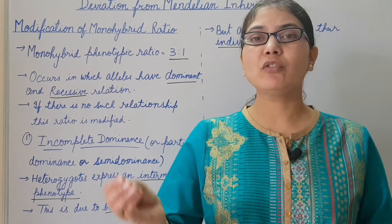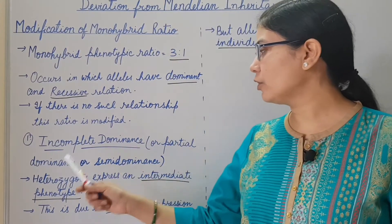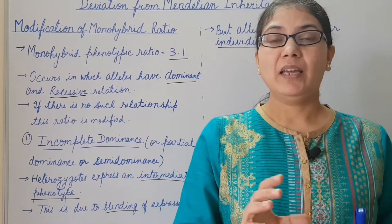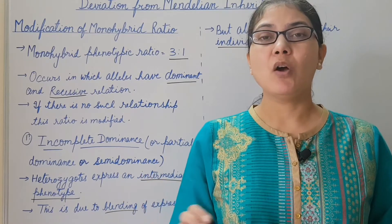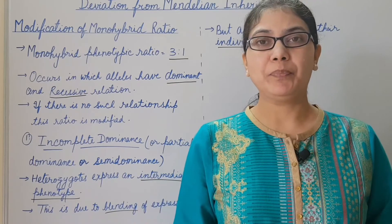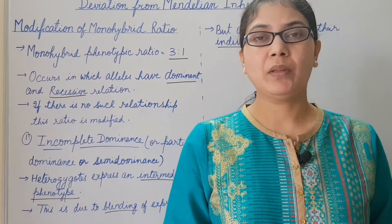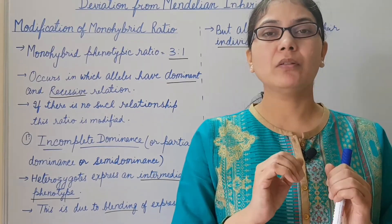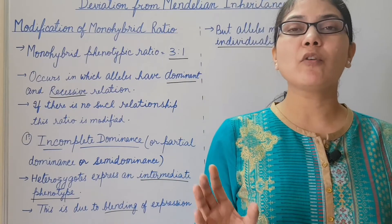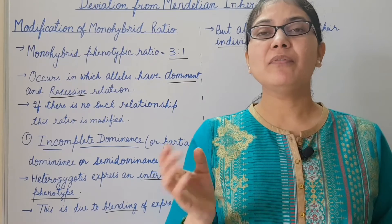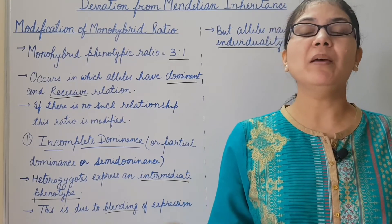One example of the modification of the phenotypic monohybrid ratio is incomplete dominance, also known as partial dominance or semi-dominance. In this, heterozygotes express an intermediate phenotype that is not present in either of the parents — different from the parental phenotype. This is due to the blending of the phenotypic expression. Alleles maintain their individuality — they are distinct and discrete. During gametogenesis these segregate, and then random fusion of the gametes takes place. Offspring obtained express parental phenotype in the homozygous state, while heterozygotes express an intermediate phenotype different from parental phenotype.